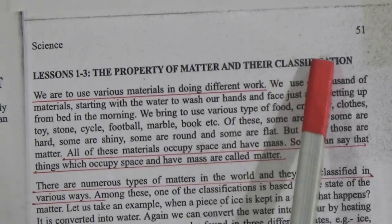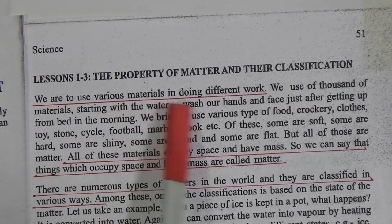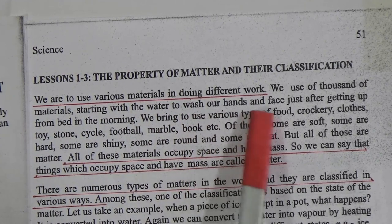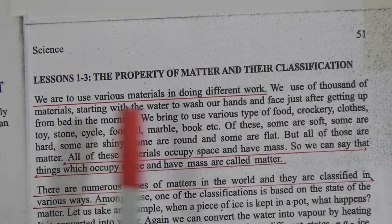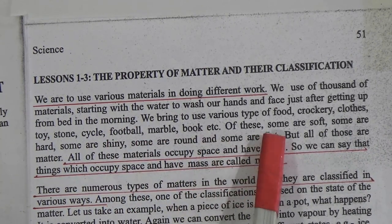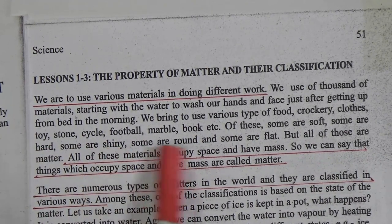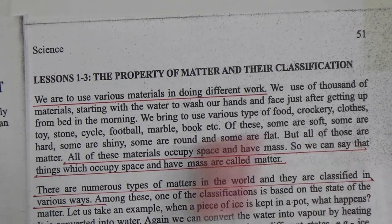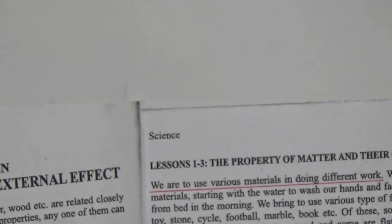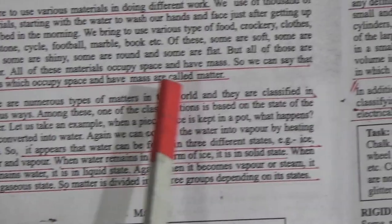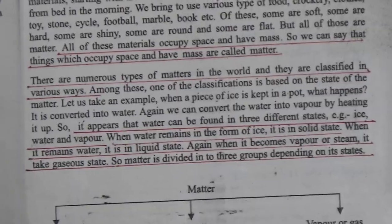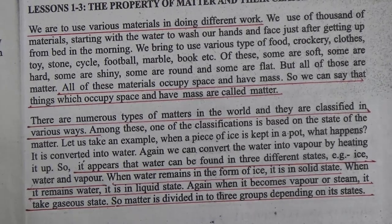Lesson 1 to 3: The Properties of Matter and Their Classification. We use various materials in doing different work — from water to wash our hands and face after getting up in the morning, to food, crockery, clothes, toys, stone, cycle, football, marble, book, and so on. Some are soft, some are hard, some are shiny, some are round, and some are flat, but all of those are matter. Things which occupy space and have mass are called matter.